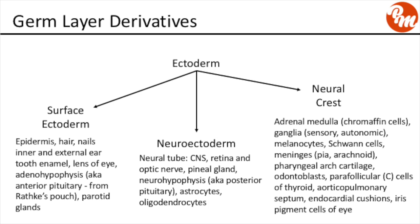Neuroectoderm goes on to produce the neural tube, which further goes on to produce the CNS, the retina and the optic nerve, the pineal gland, the neurohypophysis — otherwise known as the posterior pituitary — astrocytes, and oligodendrocytes.